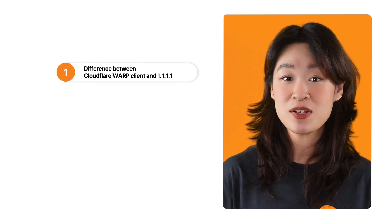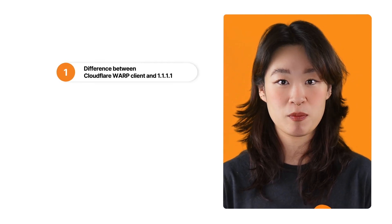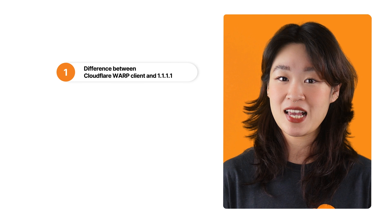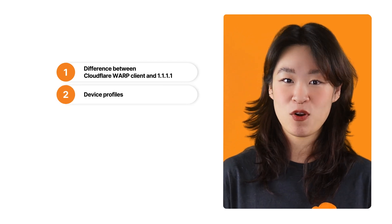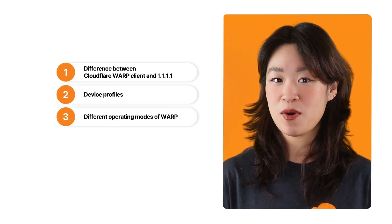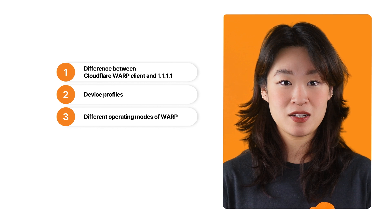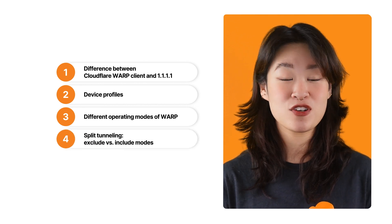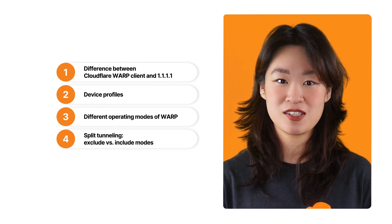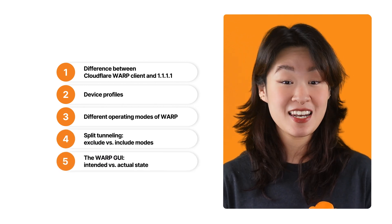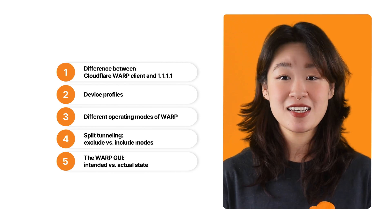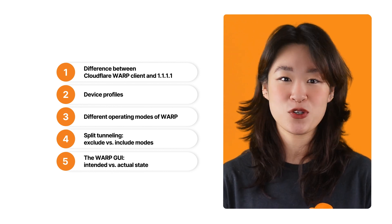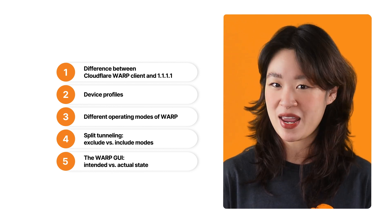We will learn the Cloudflare Warp client and how it differs from the consumer version of Warp, also known as the app 1.1.1.1, device profiles, the different operating modes of Warp, split tunneling, exclude versus include modes, and the Warp GUI and its intended versus actual state. These are the basic concepts that will prepare you to troubleshoot any issues you may encounter.